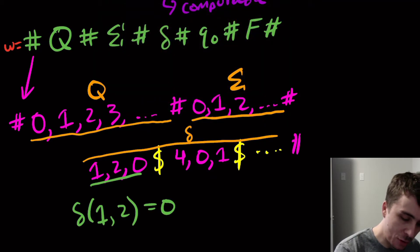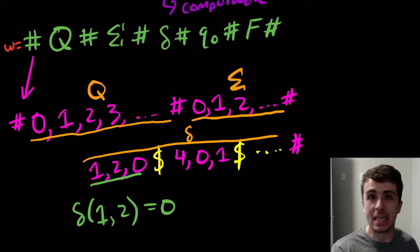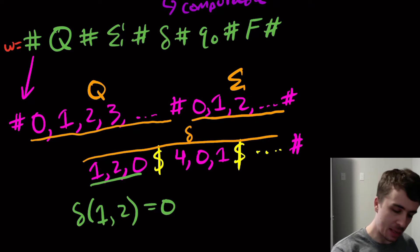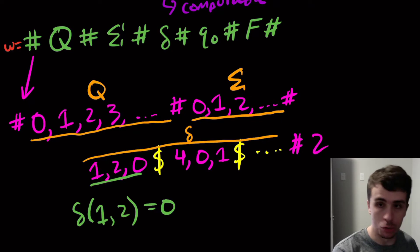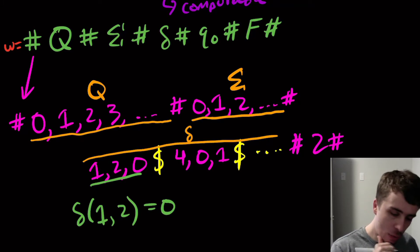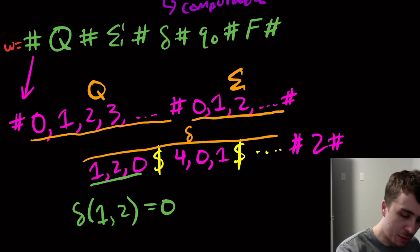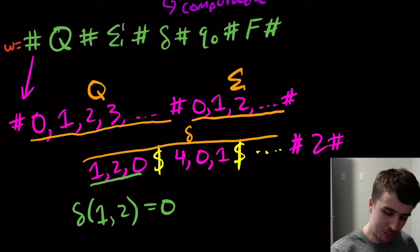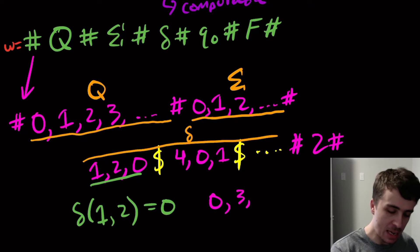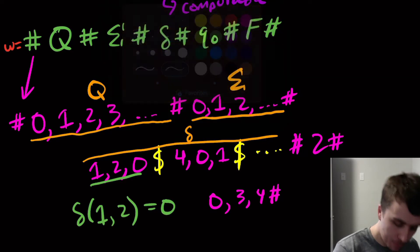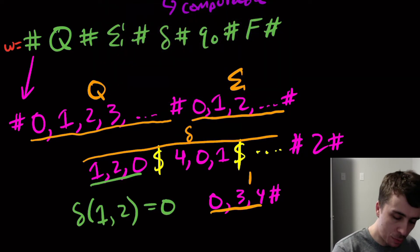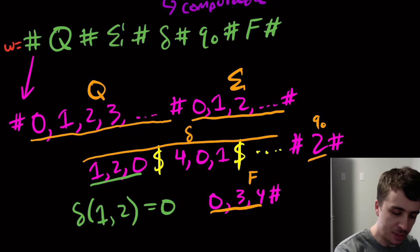After that we'll need to list which state is the start state — let's say it's two, for example — then pound sign. Then what do we do with the final states? We'll just list them out. So maybe zero comma three comma four, and that's the set of final states. So Q-zero is here and F is at the end.